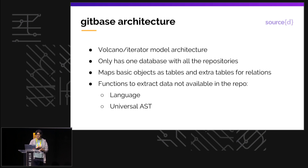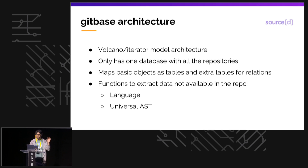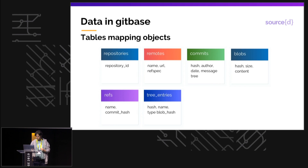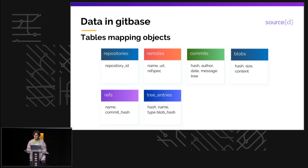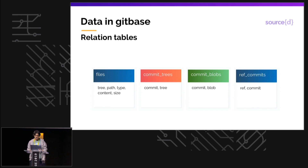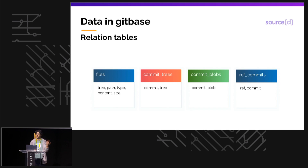GitBase uses the Volcano Iterator Model architecture, which is the most common one for relational databases. It has only one database for all the repositories, so you don't need to jump between different databases when querying across multiple ones. It maps the basic Git objects as tables — commits, blobs, and so on — and also has relation tables, like commit_blobs, so if you want to get all blobs in a commit you can use that relation.